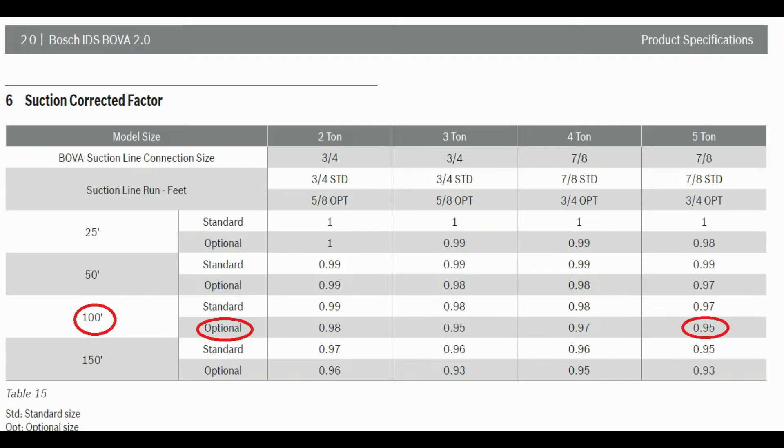But we also have some de-rate. If you're an example on the de-rate chart, 100 foot and you're running the 3/4 optional size suction line, you can have a de-rate up to 5%.